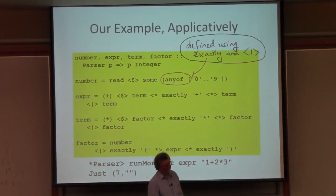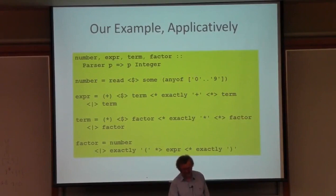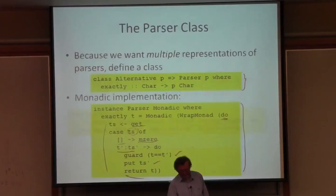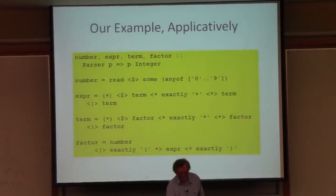Assuming you had to use alternative, what did you have to write outside of what Haskell gives you to get to where you are here? What did I have to write in order to do this? Just this class and that instance — three lines. That's all. Pretty good, huh?